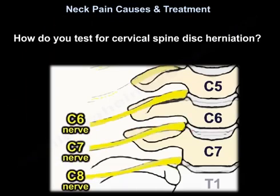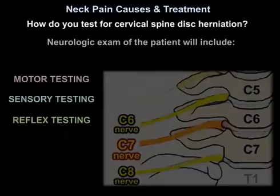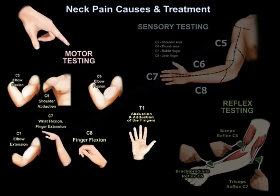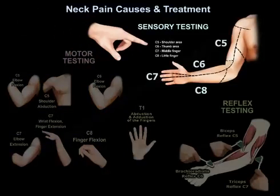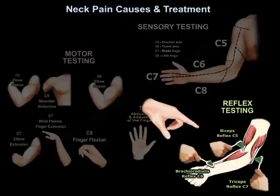How do you test for cervical spine disc herniation? You test the motor, the sensory, and the reflexes. This is how you test the motor strength of the nerve roots from C5 to T1. This is how you test the sensation, as shown in this diagram. This is how you test the reflexes, as shown in this diagram.